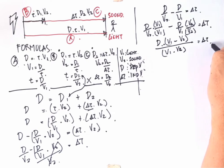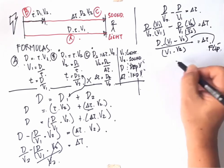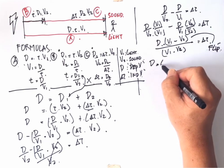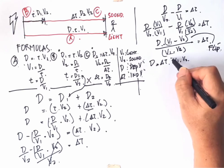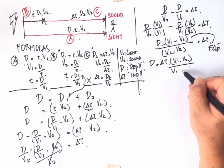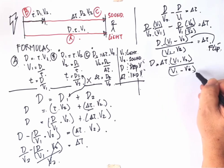And we can move and flip this: D times the quantity one over V2 minus one over V1 equal to delta T. D divided by the quantity V1 minus V2 over V1 times V2 equal to delta T.